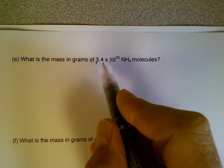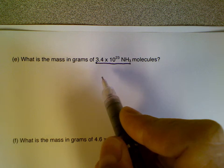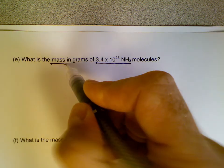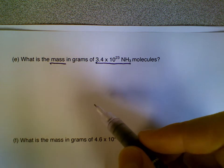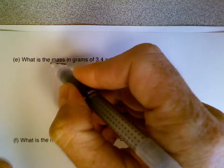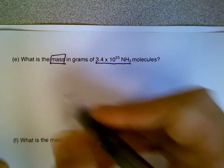In this problem, we're given the number of molecules, 3.4 times 10 to the 23 NH3 molecules, and being asked to find the mass. This is a multi-step problem where moles is the middle step. But we're being asked to find mass, so at some point we need to know the molar mass of NH3, and that's a good beginning point.